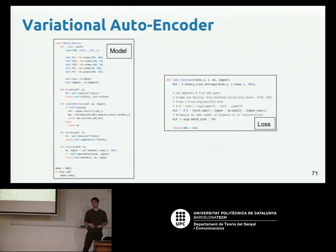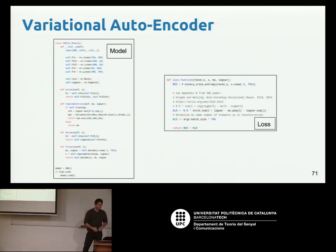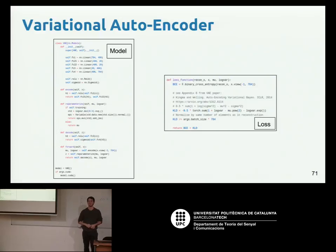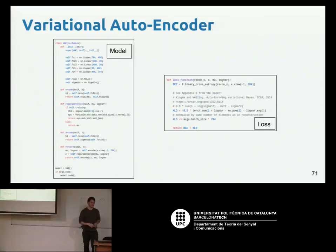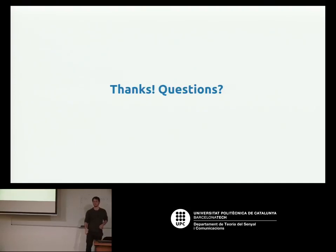Variational autoencoders define a simple loss in just a few lines of code, and are the first generative model we've seen that's not autoregressive and therefore not that computationally costly. However, they don't generate images as sharply as the next model we'll see — generative adversarial networks. Next day we'll cover GANs and compare them with VAEs and PixelCNNs.